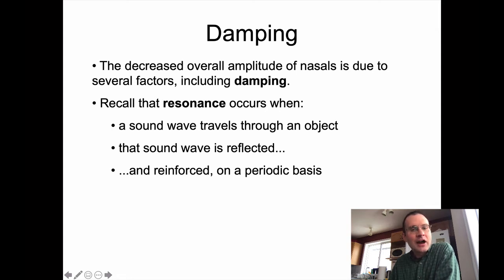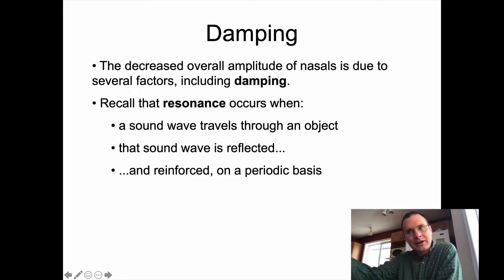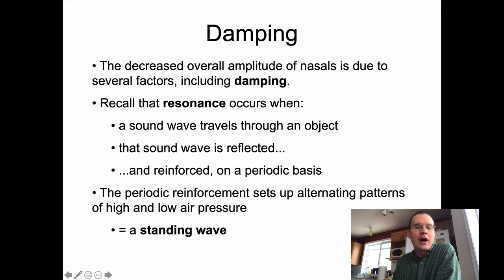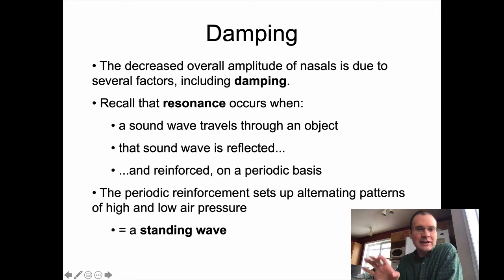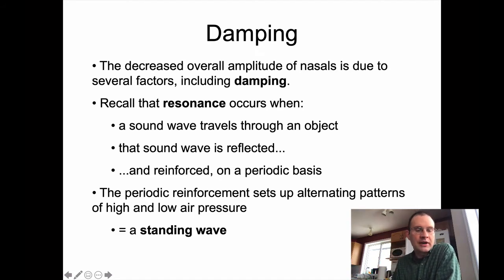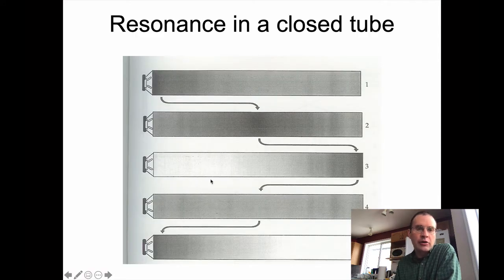With resonance, we have a sound wave traveling through an object like a tube. It bounces, comes back, and we reinforce it. We keep pushing the kid on the swing, and if we keep pushing at the right frequency and keep reinforcing that pattern of motion, we get what is called a standing wave in our resonator. We normally think about this in terms of a closed tube, because that's close enough to what we do when we voice things in speech.